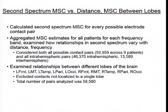We extended our second spectrum analysis to consider every possible electrode contact pair in these patients. We calculated second spectrum coherence for every possible pair, aggregated estimates for all patients in each frequency band, and examined how second spectrum relationships vary with distance and frequency. We looked at all possible contact pairs — 59,959 pairs across nine patients — and also all intra-hemispheric pairs, giving 46,370 intra-hemispheric pairs.